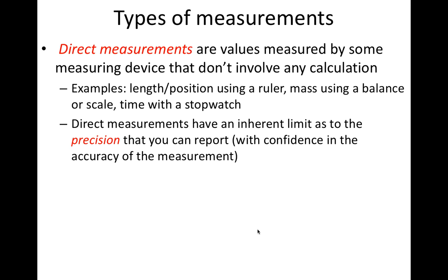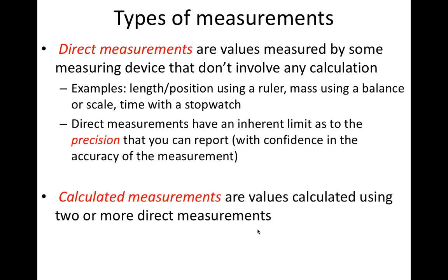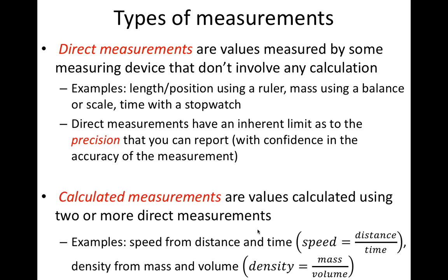The precision of a device with a digital readout is related to how many decimal places the device reports. A calculated measurement is a value calculated from two or more direct measurements. For example, you might measure the speed of a moving object by measuring the distance it moves in some amount of time. Because there's a limit to precision in both the distance and time measurements, there is a related limit to the precision for the measurement of speed. I'll discuss how to find the precision of a calculated measurement in a later slide.